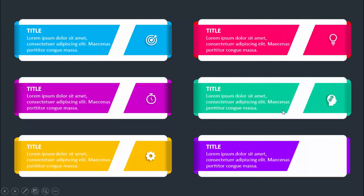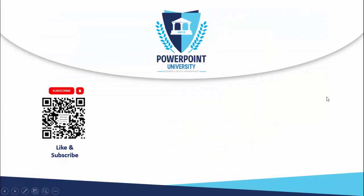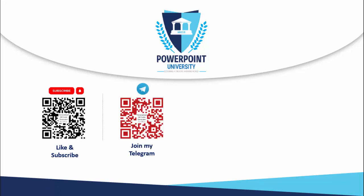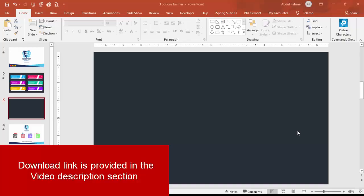The sixth option as well. Depending on your requirement you can increase or decrease the number of options. I have also created one more slide with only three options. If you're not subscribed to my channel PowerPoint University, please subscribe and enable the bell notification icon. You can join my Telegram group using the QR code, and you can support my channel through PayPal or Patreon. Let's start the tutorial.